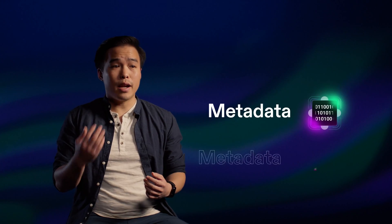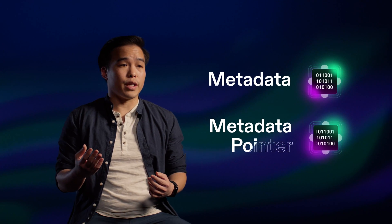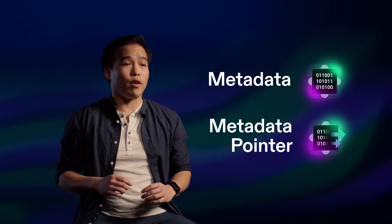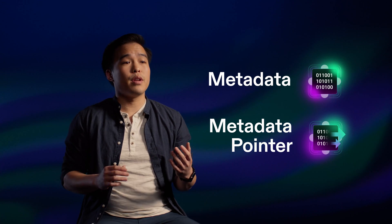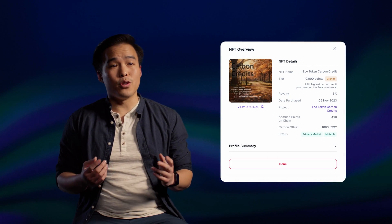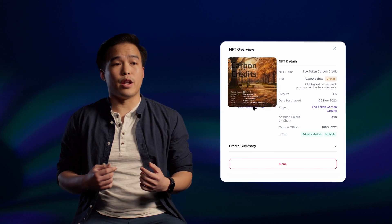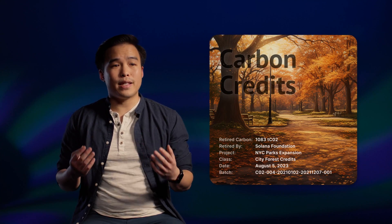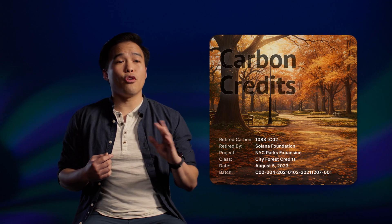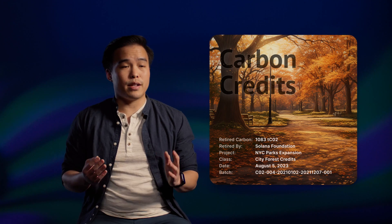Using the metadata and metadata pointer token extensions, developers can create whole new classes of fungible, semi-fungible, and non-fungible tokens. The metadata extension provides a lightweight set of on-chain attributes that can be used to easily store key details about the state of a token for use in a program. The metadata pointer extension allows full programmatic customization of metadata for that token, perfect for games or new asset classes.